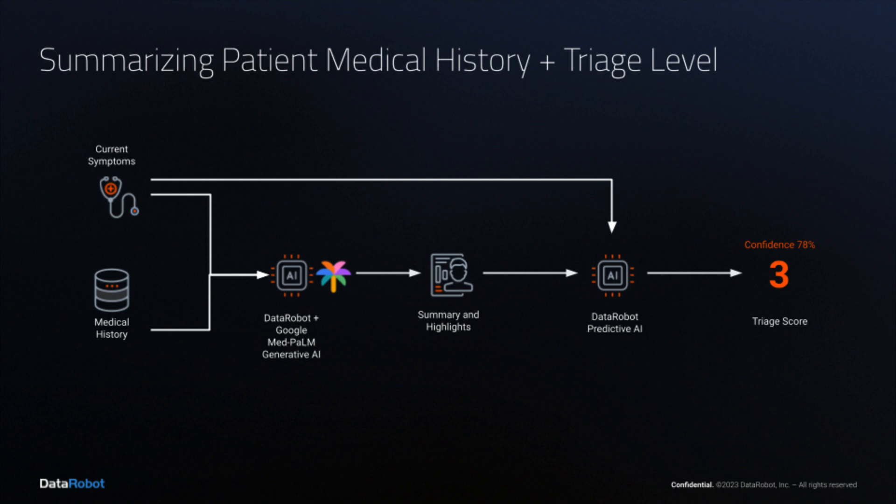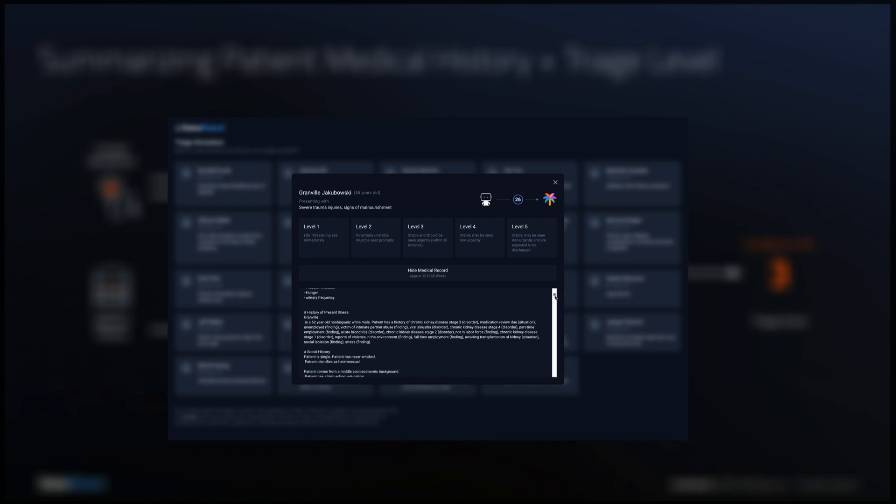This diagram shows how current symptoms plus a long medical history can be passed to a generative model to produce a summary with highlights. Most electronic medical records store information in reverse chronological order. This is a problem if a comment or a diagnosis lower down on the page is actually the most important.